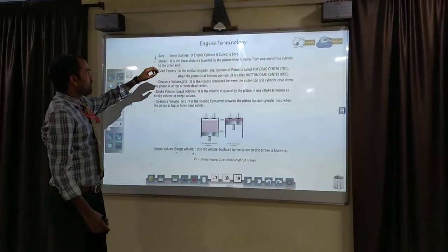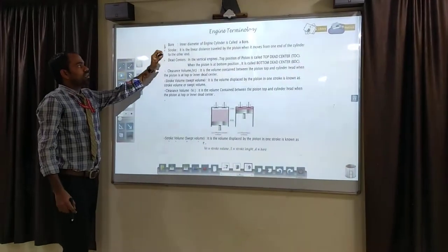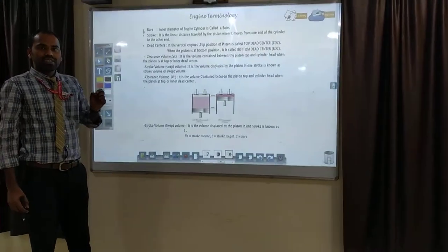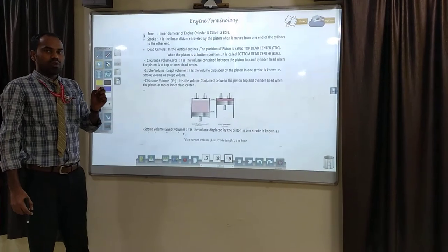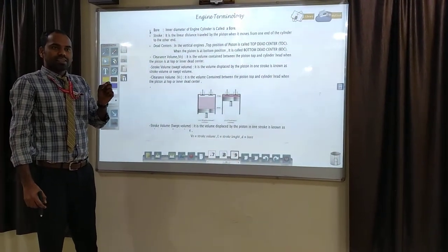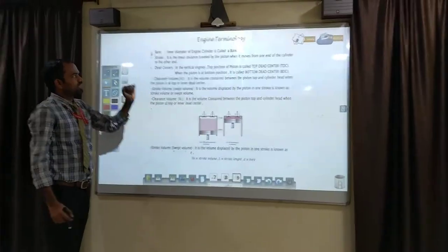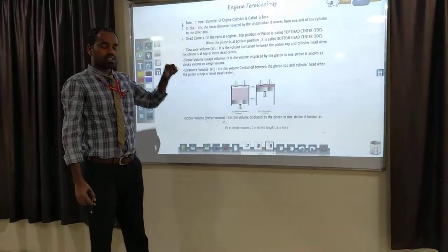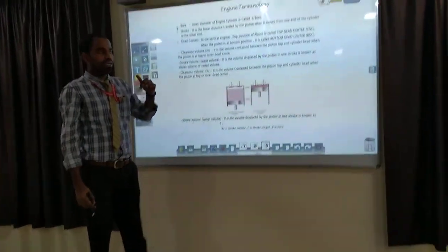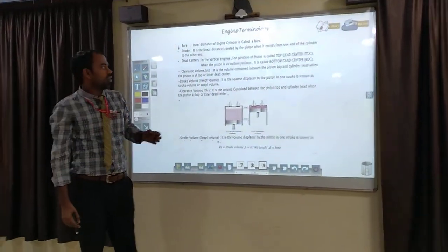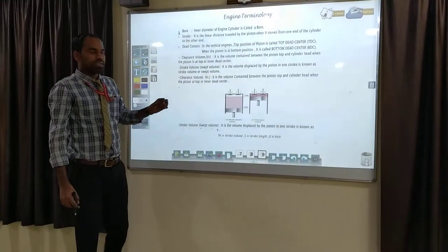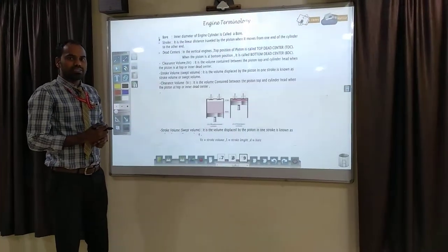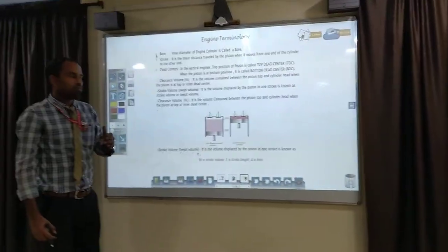In the terminology, the first point is bore — the inner diameter of the cylinder. The inner diameter of the cylinder is called bore, denoted by L. The second is the stroke: it is the linear distance travelled by the piston when it moves from the top end of the cylinder to the outer end. In vertical engines, the top position of the piston is called the top dead centre, and the bottom position of the piston is called the bottom dead centre.